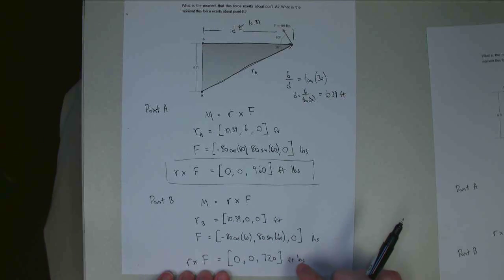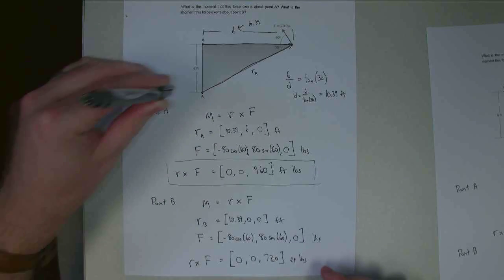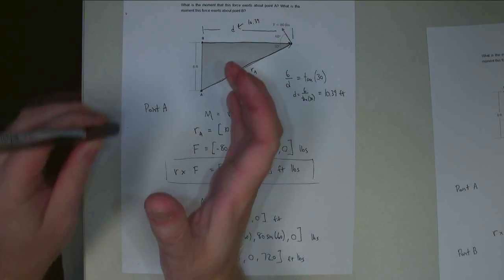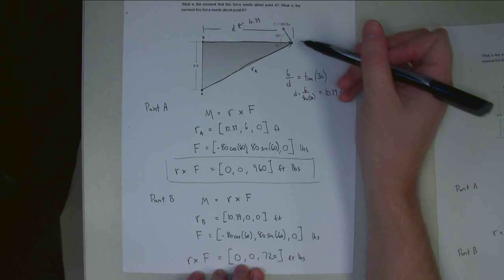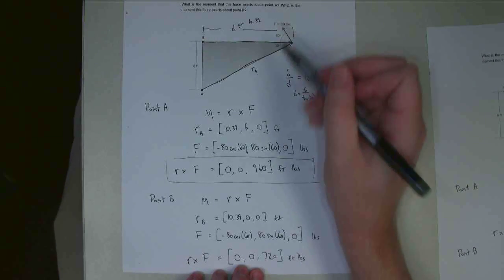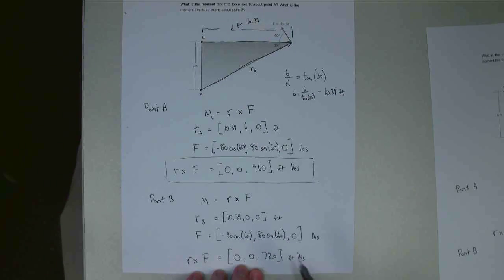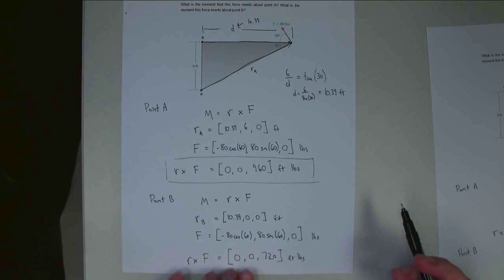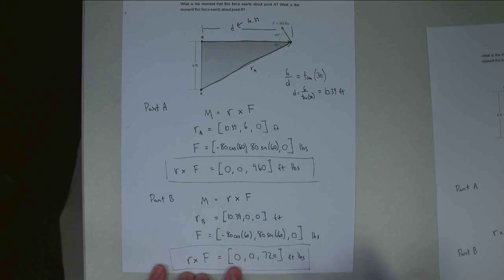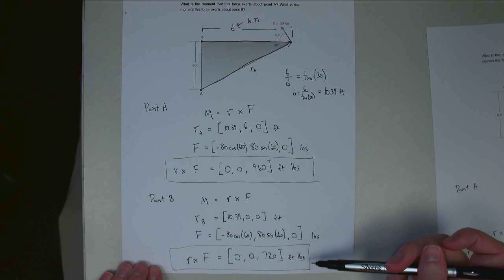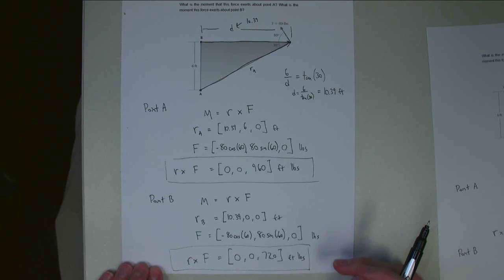So that means the moment vectors in both of these cases are in the Z direction, which means the moment vectors are positive. They're sticking out of the page, and that means a counterclockwise twist, which kind of matches with what I'd expect. This force would cause the body to rotate counterclockwise if I choose A or B as my fixed axis there. And that is the moment about point A, moment about point B. So we've got our answer. Thank you for watching, and I hope to see you again.